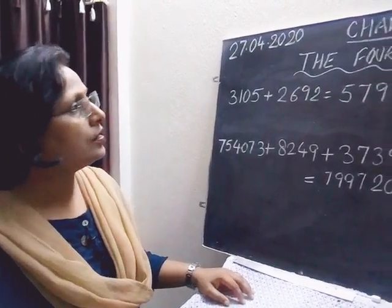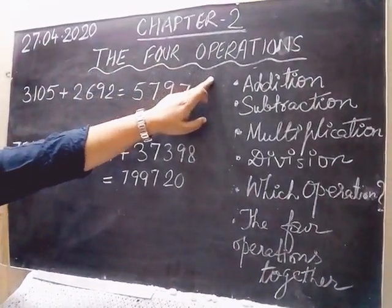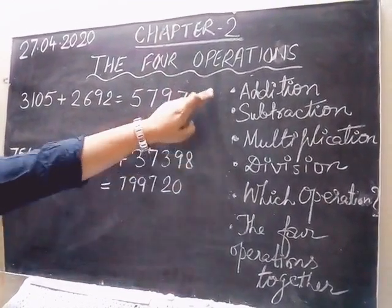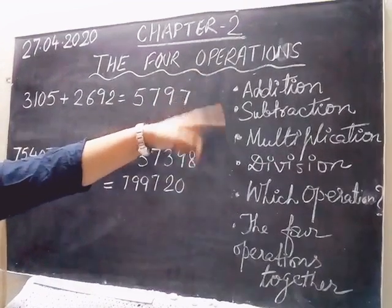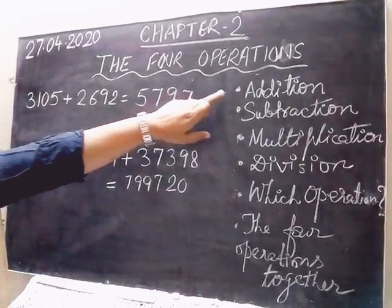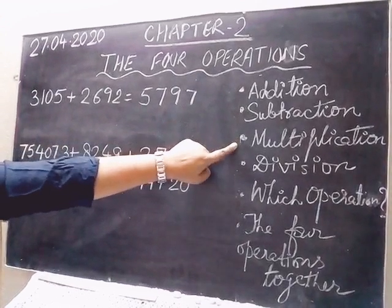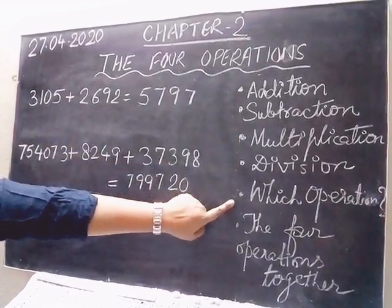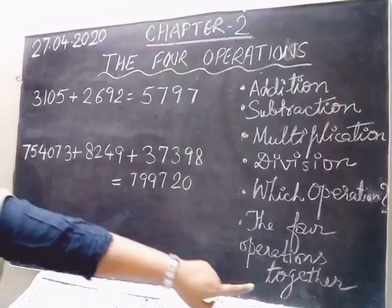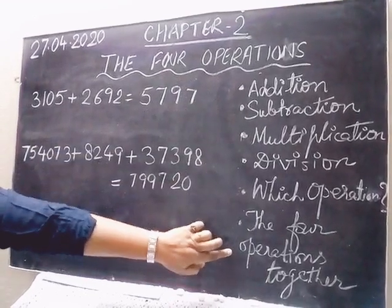In this chapter we have these subtopics which we will study one by one. You will get the mind map of this chapter with your worksheet attachment. The first topic is addition, then subtraction, then multiplication, then division, and finally all four operations together in one question.